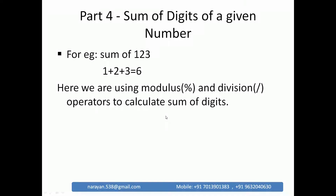Hi, this is Narayan. Today I am going to explain sum of digits of a given number. For example, sum of 1 2 3 means 1 plus 2 plus 3 equal to 6. We will use modulus operator and division operator to calculate the logic. First we will discuss the logic using an Excel sheet, then we will execute the program using Visual Studio.